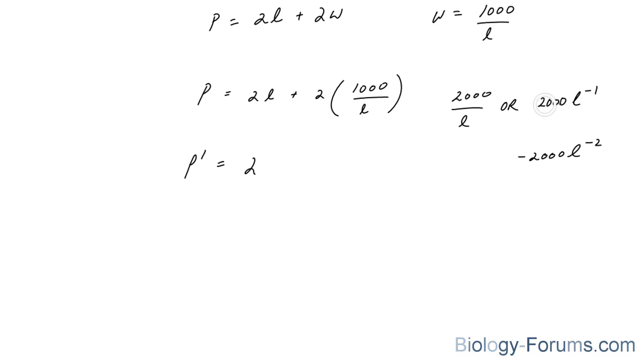you multiply it by the coefficient, and then you subtract this by 1. So this ends up becoming negative 2,000 over L to the power of 2.